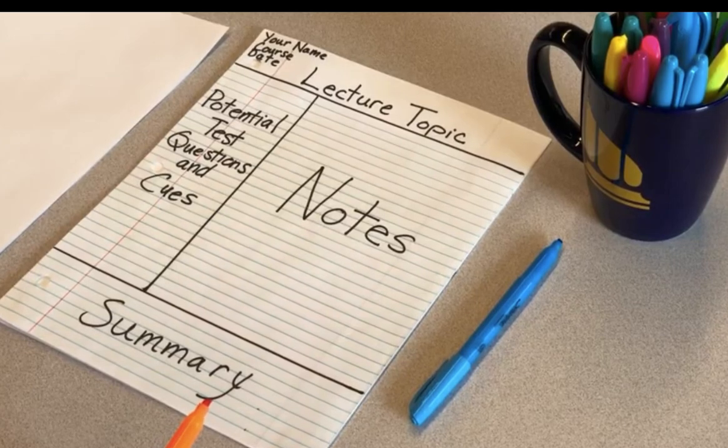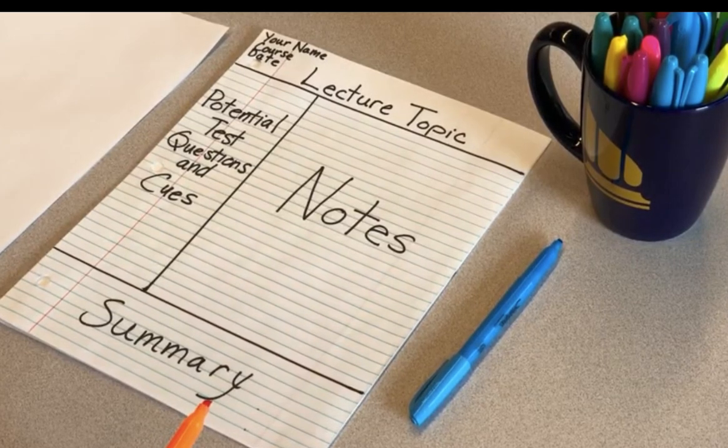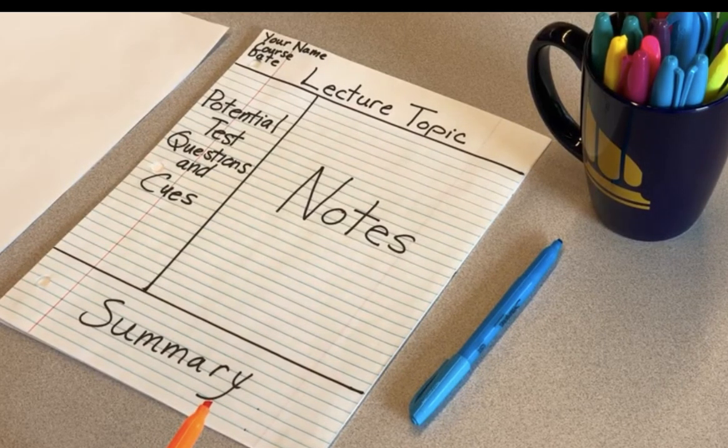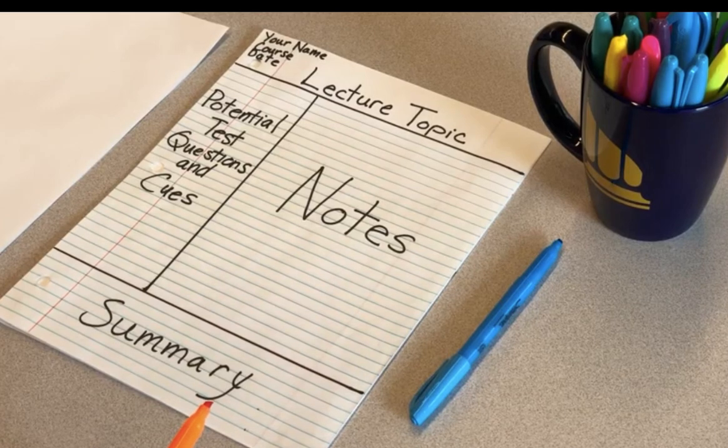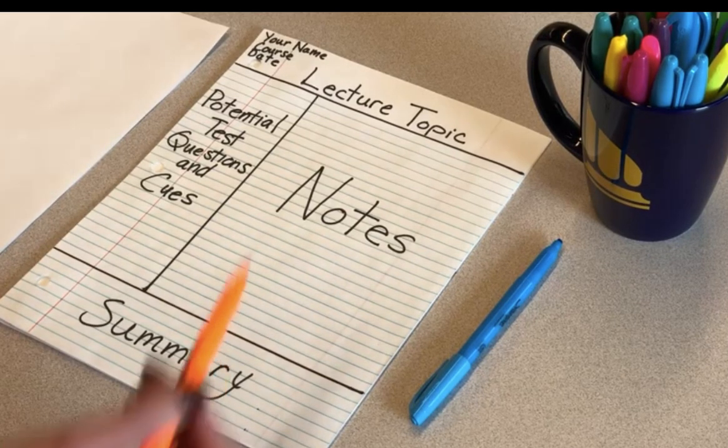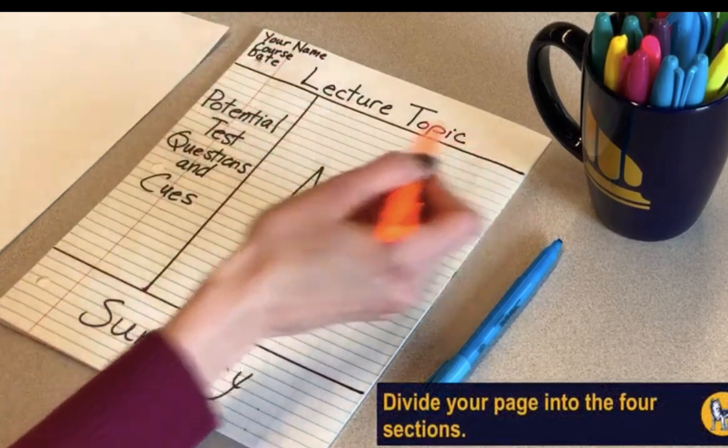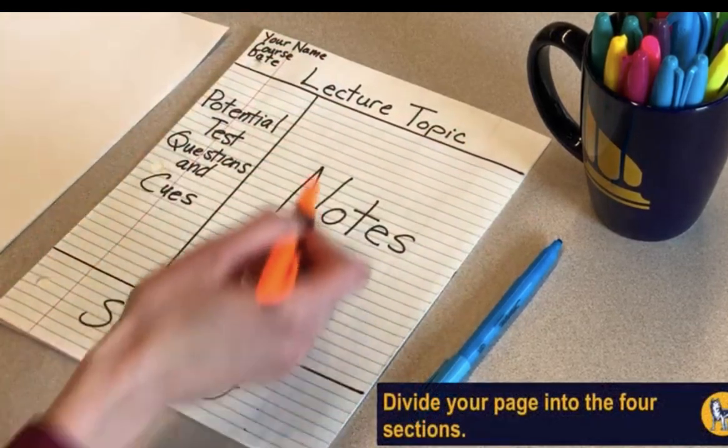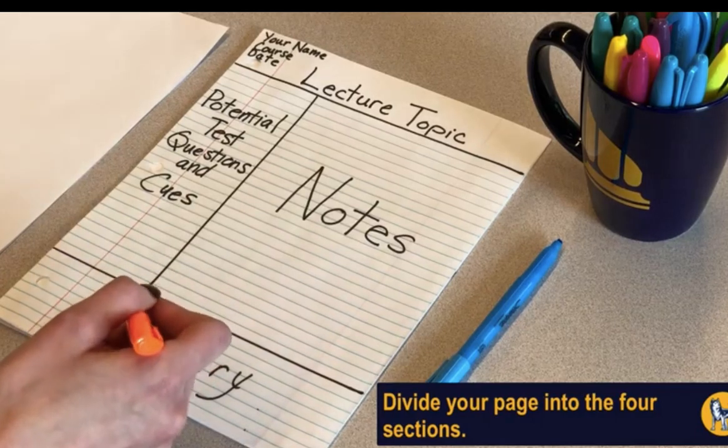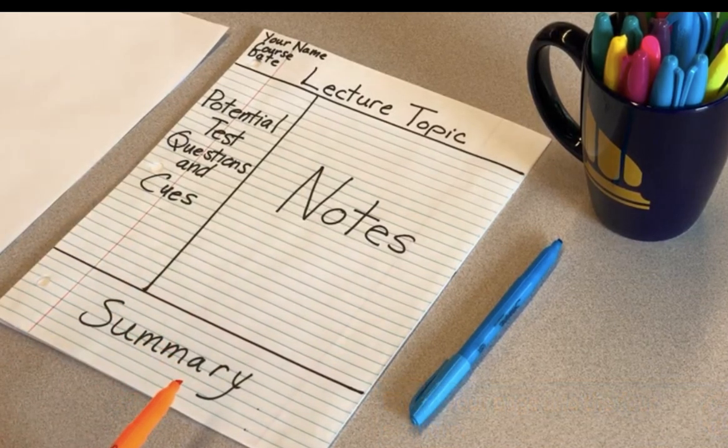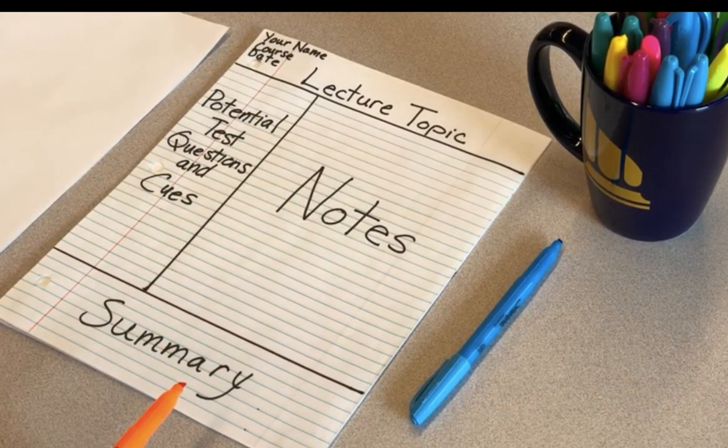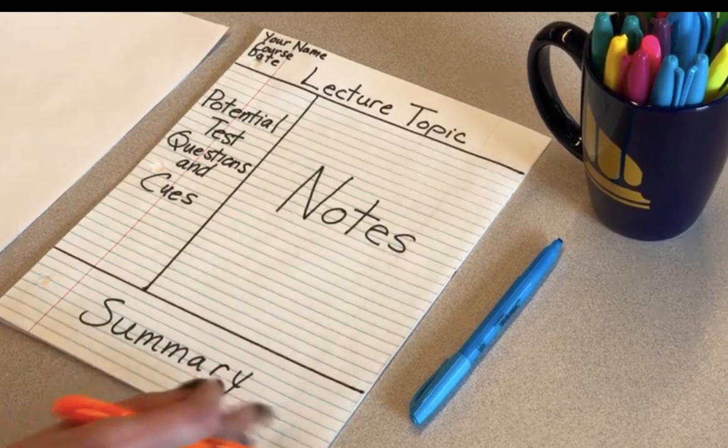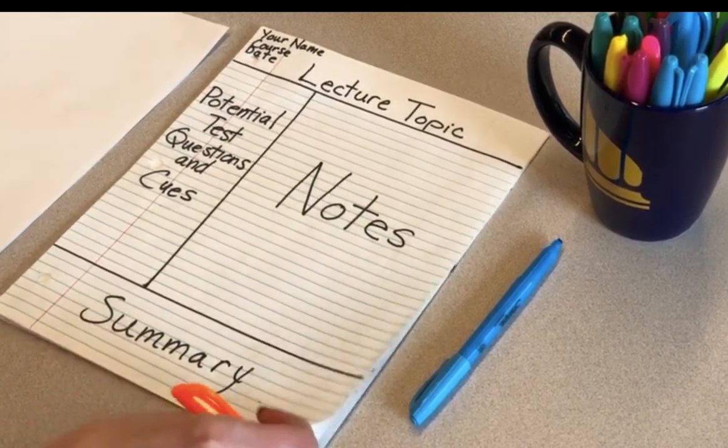You'll want to devote notepaper solely to your Cornell style notes. Whether you use a notebook or loose sheets kept together in a binder, you'll want to have pages set aside just for note-taking. You will divide each sheet into the four sections. One-third of the width should be kept in the left column with the remaining two-thirds for the right column. You can do this by hand or by printing an online template. You can even purchase a notebook with the template design.